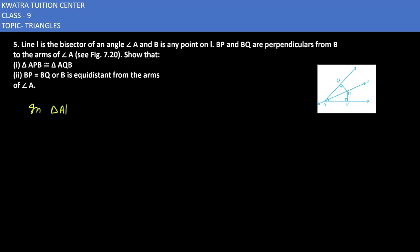We have triangle APB and triangle AQB. Now what we can do is write the common things which are there. I can see what is common in the triangle — it is AB. So we write AB is equal to AB, and in bracket we write it is common.